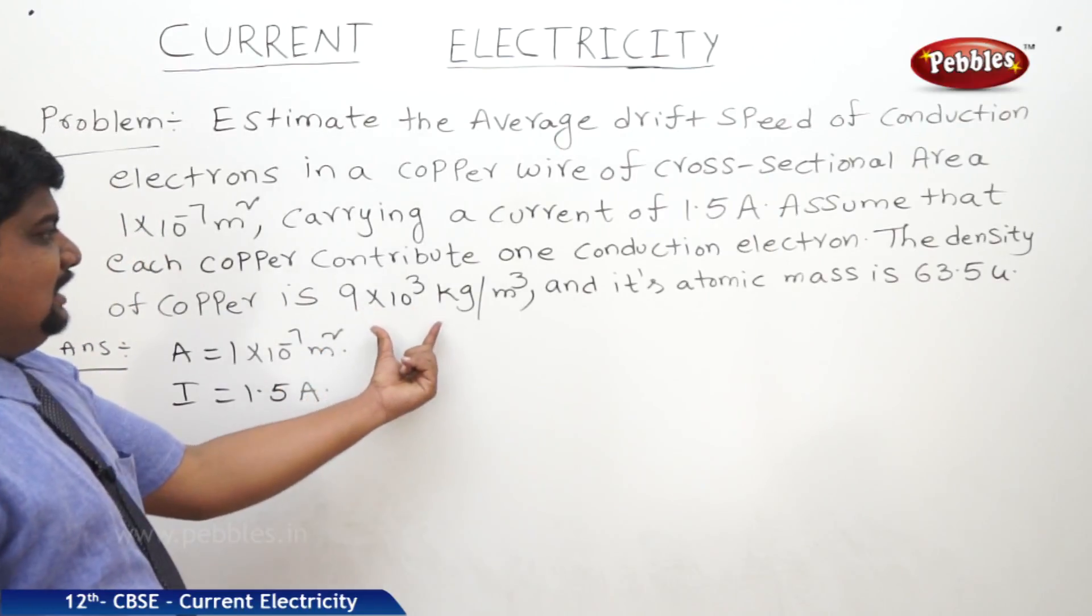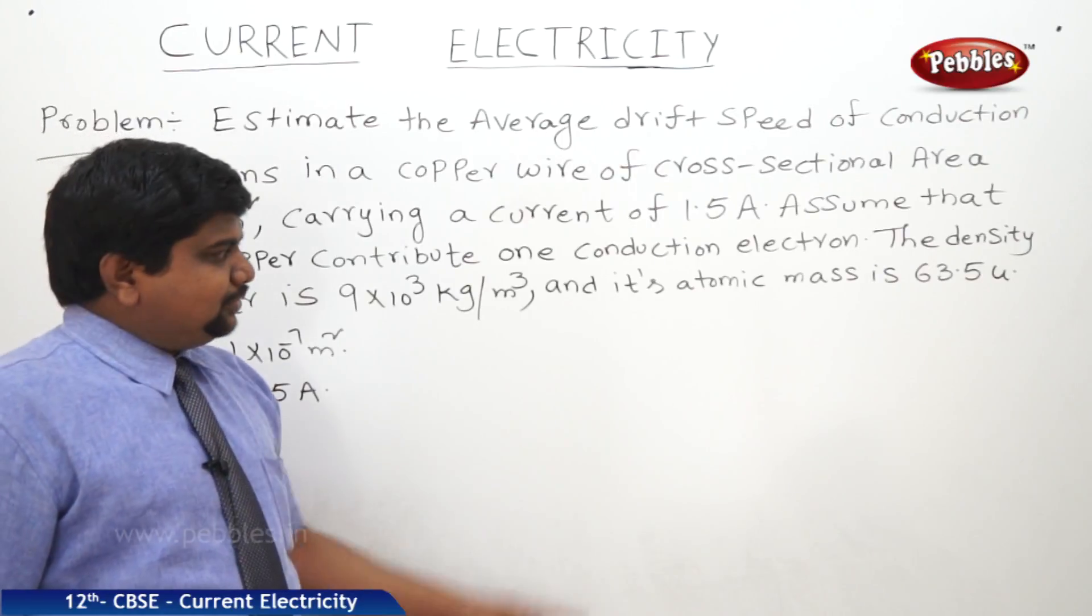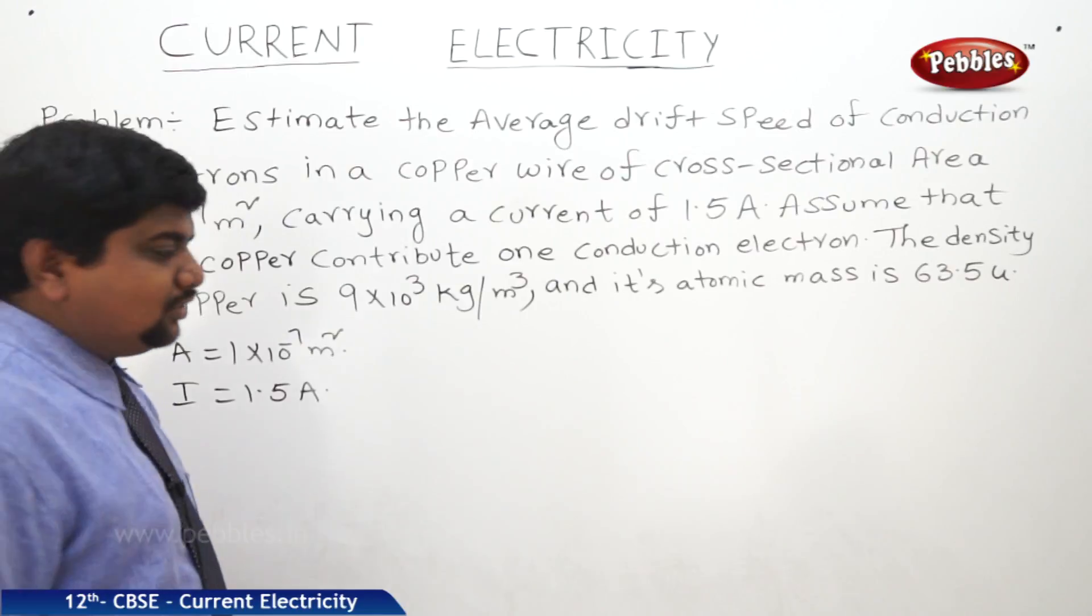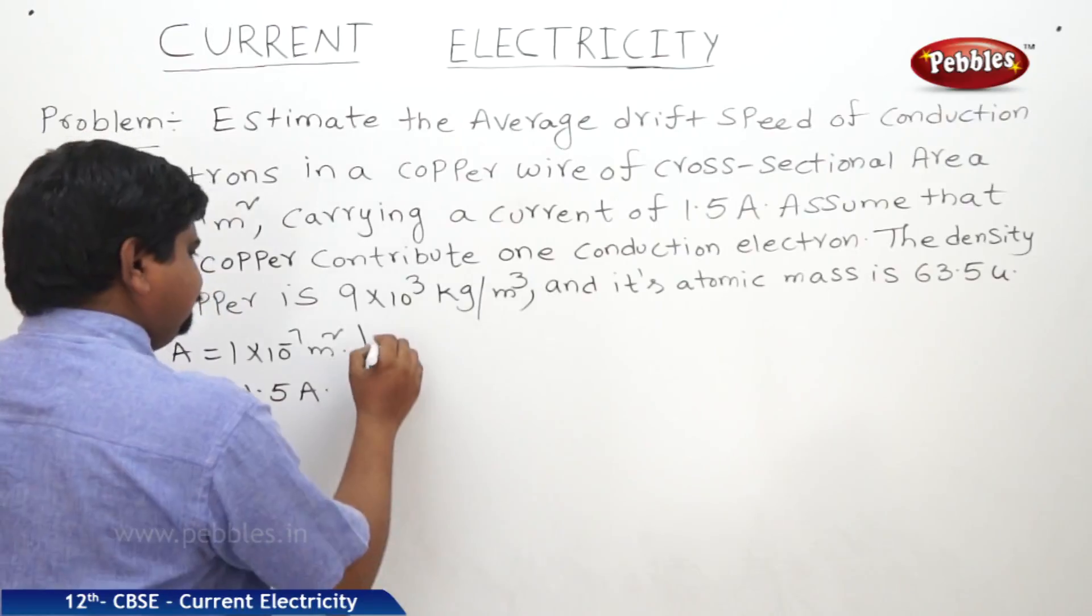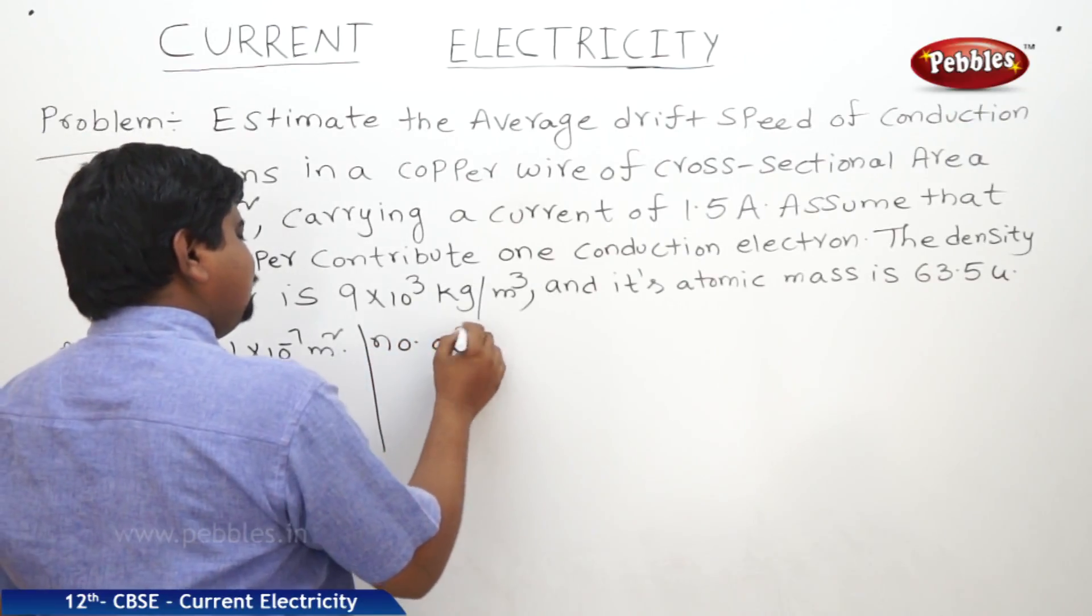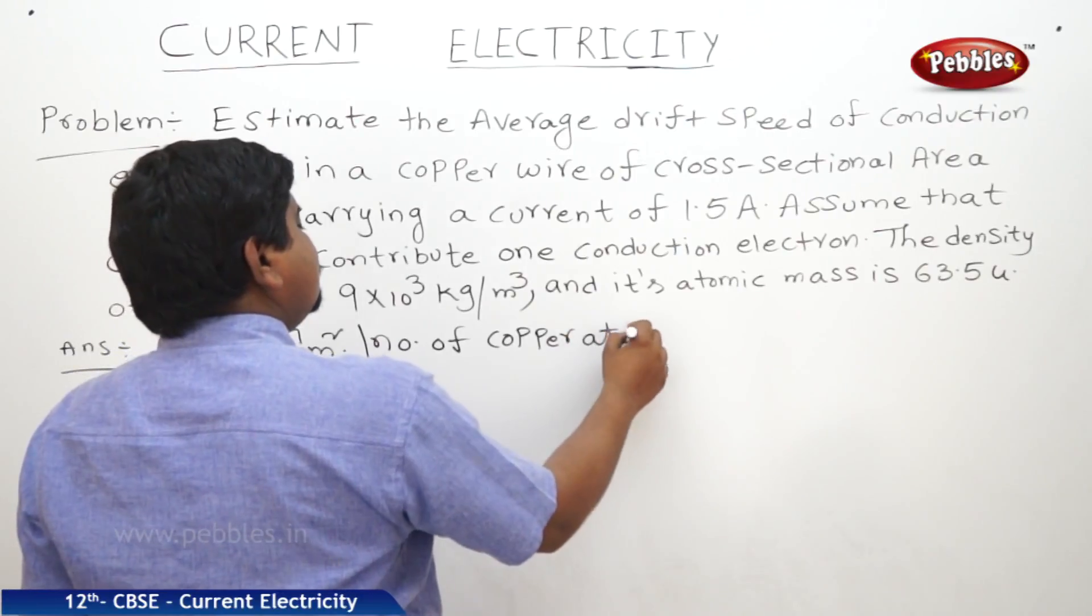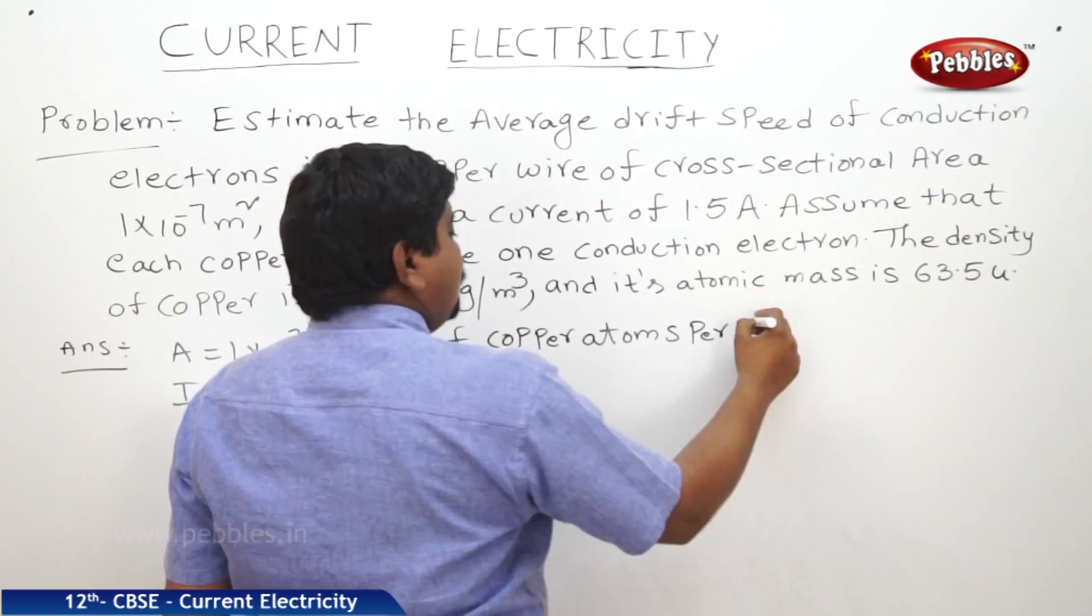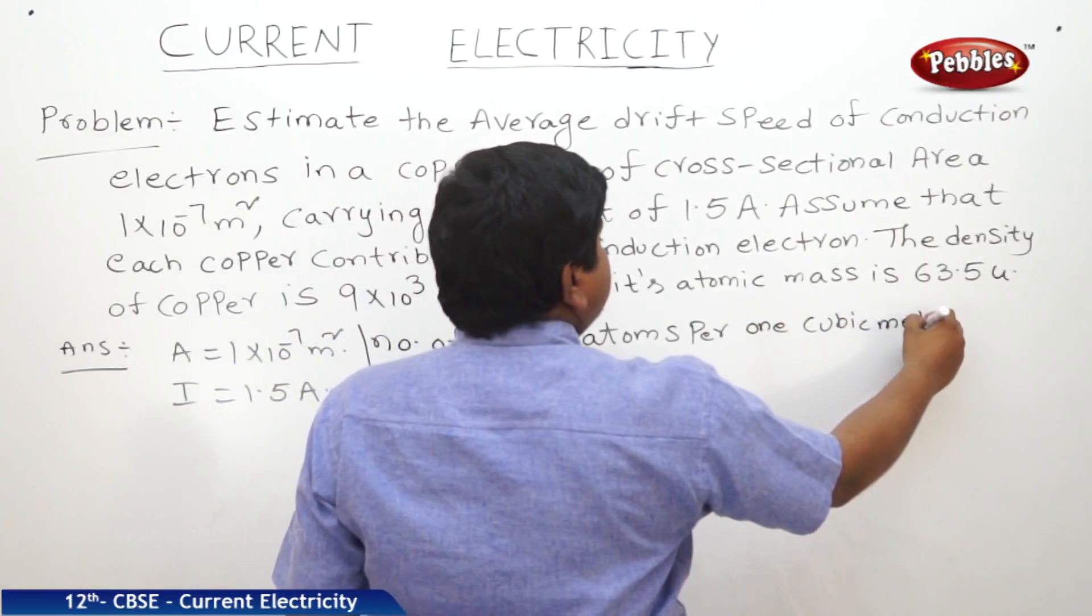Here, what is the density of copper? 9 into 10 to the power of 3 kg per meter cube. Its atomic mass is 63.5 units. Now we should find out number of copper atoms per one cubic meter.